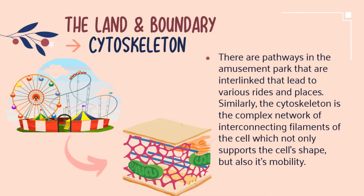Next on our list is the land and its boundaries. The land and its boundaries are comparable to the cytoskeleton, for the reason that there are pathways in amusement parks that are interlinked and lead to various rides and places. Likewise, the cytoskeleton is the complex network of interconnecting filaments of the cell, which not only supports the cell structure but also drives cell movement.